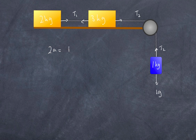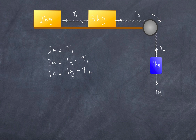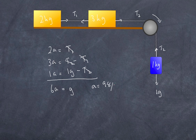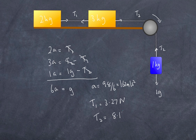Writing Newton's second law: 2A equals T1; 3A equals T2 minus T1; and 1A equals 1g minus T2. Adding all three equations, the T's cancel out and I get 6A equals g. So acceleration equals 9.8 divided by 6, giving 1.63 m/s². Substituting back, T1 equals 3.27 N and T2 equals 8.17 N. It's just a simultaneous equations problem.